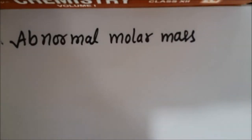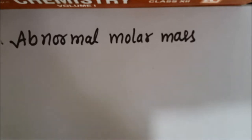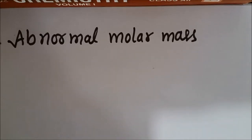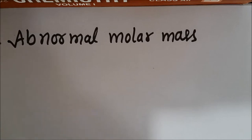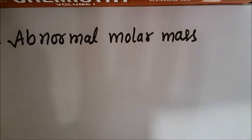Welcome back students. Today we are taking up the next topic of chapter Solution of class 12, that is abnormal molar mass. What is abnormal molar mass? When the molecular mass of a substance is determined by studying any of the colligative properties and it comes out to be different than the expected value, that substance is said to show abnormal molecular mass.